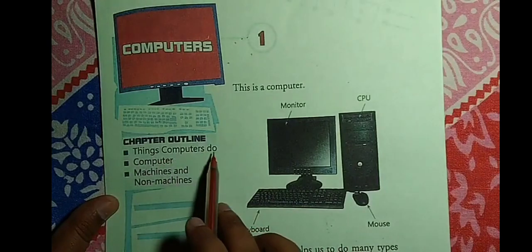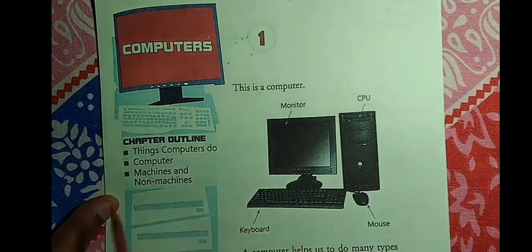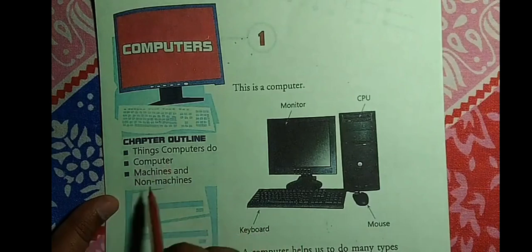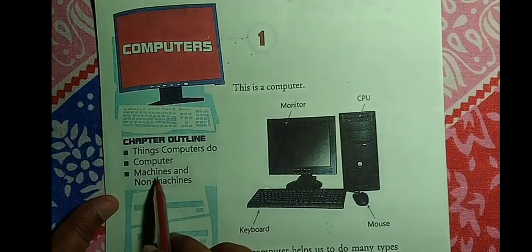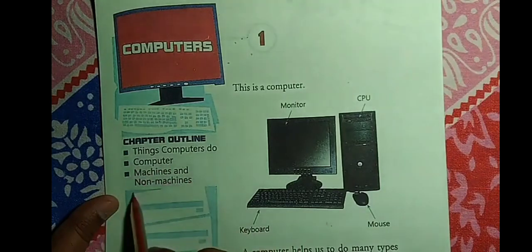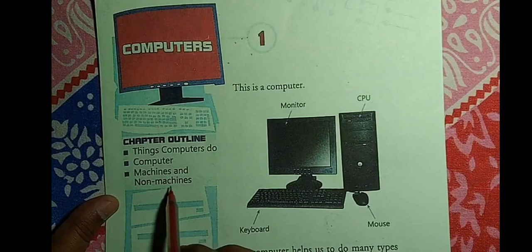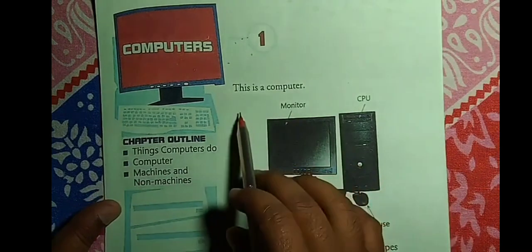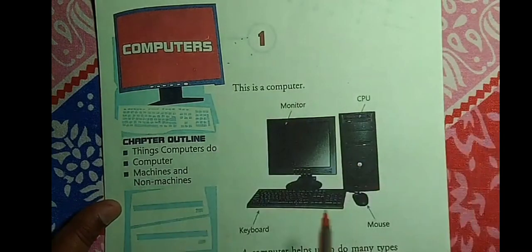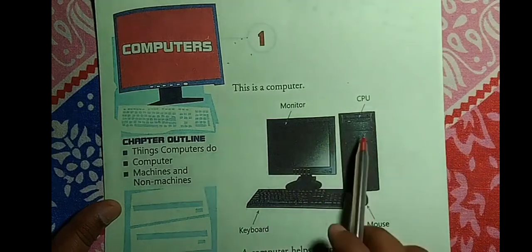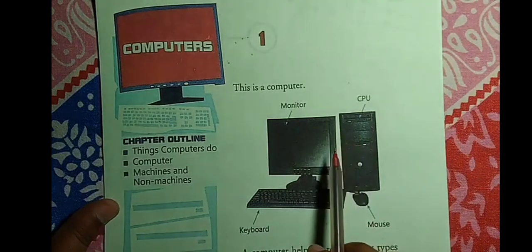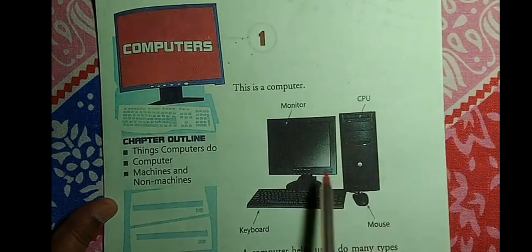The chapter covers what a computer does, machines and non-machines — which things are machines and which things are not machines.